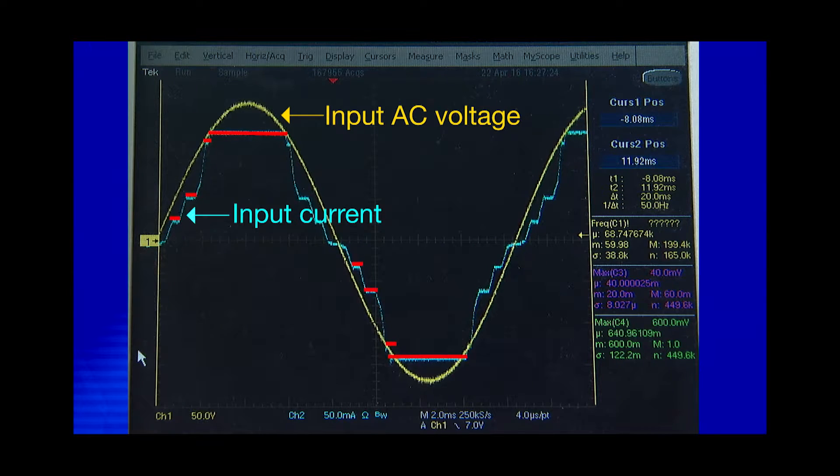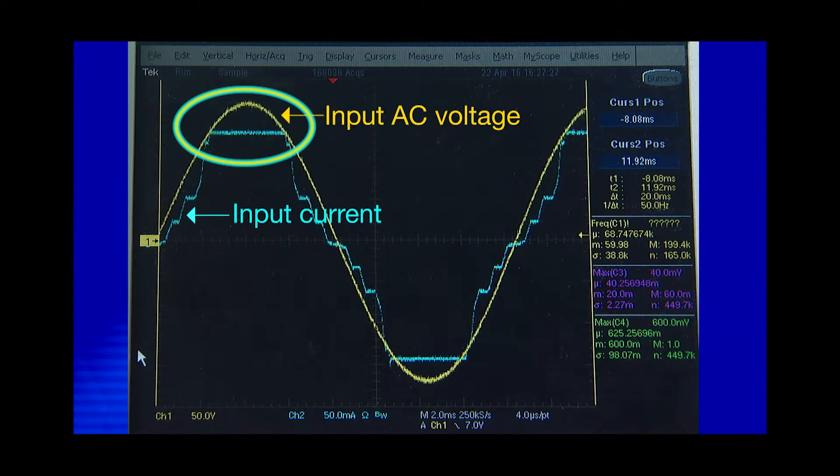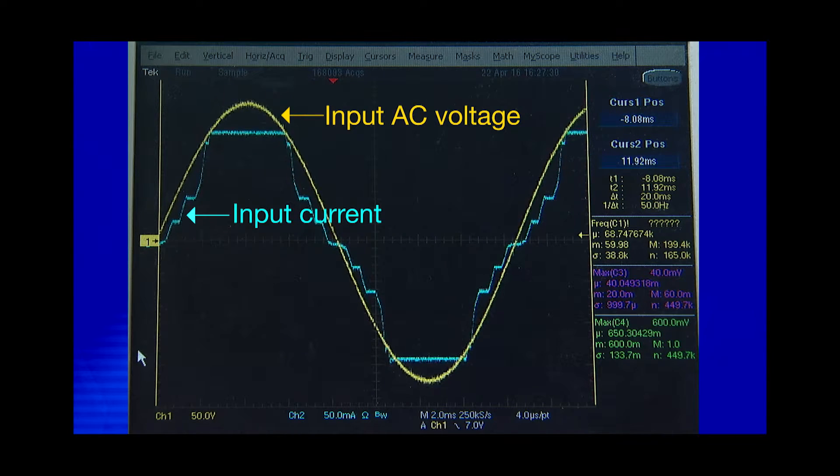So there are four steps in the input current waveform within each half of the input voltage. Notice that the input voltage and current are actually in phase and the current waveform is close to a sinusoid which gives you high PF and low THD performance.